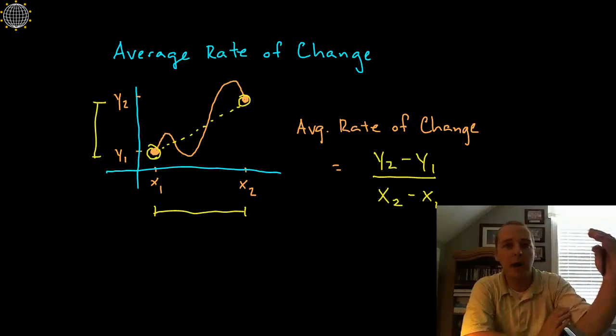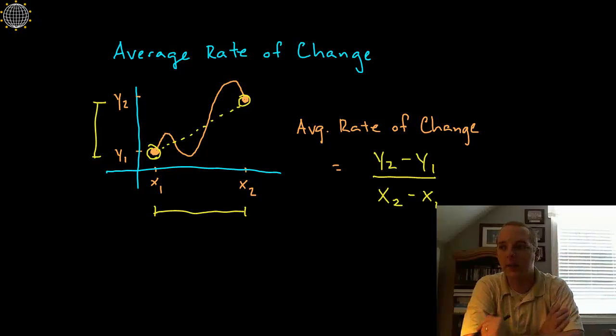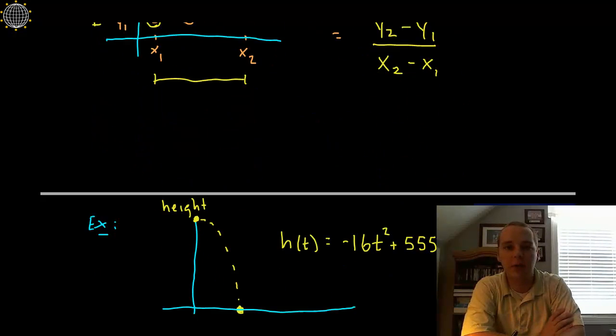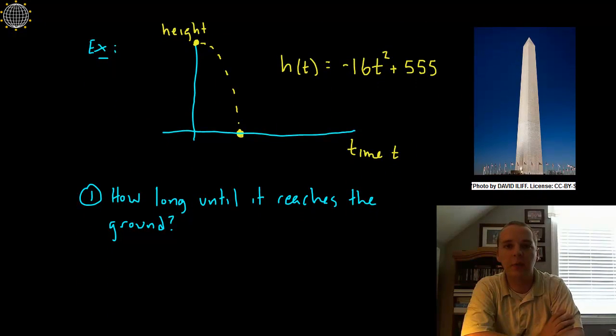It could be miles per hour, feet per second, dollars per month, it could be anything really, but this right here is our average rate of change. Alright, let's look at an example here real quick.